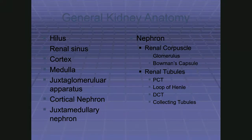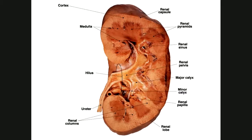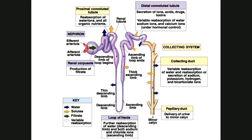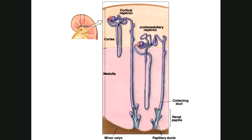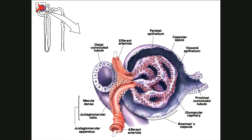There are two types of nephrons: cortical nephrons are mainly in the cortex, while juxtamedullary nephrons have a longer loop of Henle that extends down into the medulla. This longer loop is what super-concentrates the urine. So the juxtamedullary nephron's function is to super-concentrate the urine compared to cortical nephrons. Most nephrons are cortical, but the juxtamedullary ones do extra concentration.